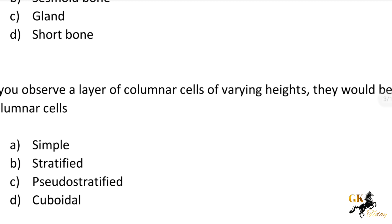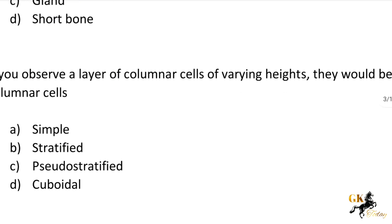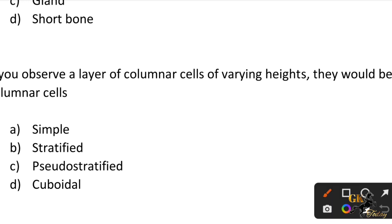Next question: If you observe a layer of columnar cells of varying heights, they would be called — dash — columnar cells. Option A: Simple. Option B: Stratified. Option C: Pseudo Stratified. Option D: Cuboidal. The answer is Pseudo Stratified columnar cells.